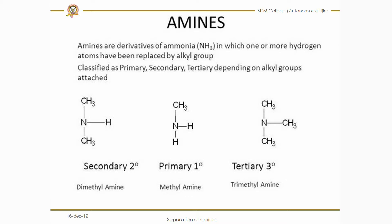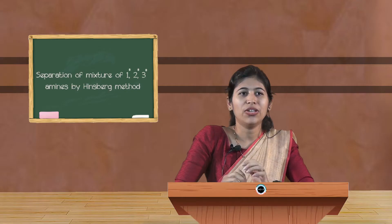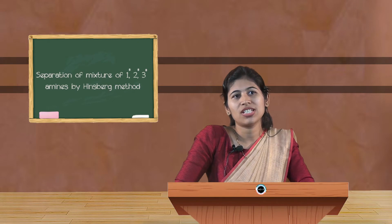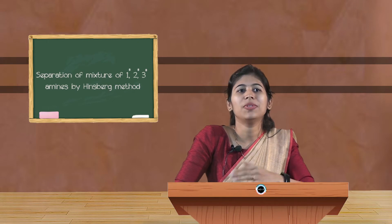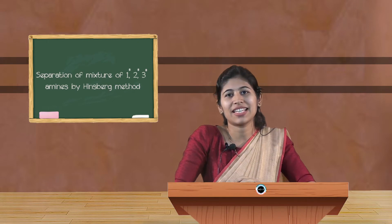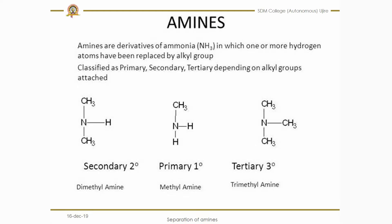If one hydrogen in ammonia is replaced by an alkyl group, it is considered a primary amine. If two hydrogens are replaced by alkyl groups, it is a secondary amine. If three hydrogens are replaced by alkyl groups, it is a tertiary amine.